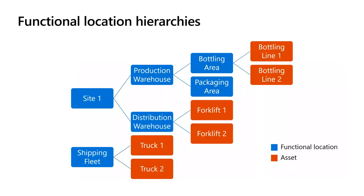Functional locations, just like assets, can also have a hierarchy with multiple levels. We can see an example where we have a functional location for site one and under that two children locations for the production warehouse and the distribution warehouse. The production warehouse is split further into the bottling area and the packaging area, and we have one flat functional location for the shipping fleet. Under the bottling area, we've installed the bottling lines; in the distribution warehouse, we've installed the forklifts; and in the shipping fleet, we've installed the trucks.